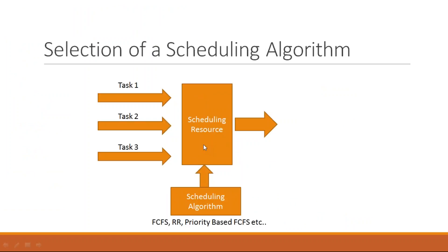The next tutorial I'd like to consider is selection of a scheduling algorithm. We are considering a scenario with three different tasks running on a single processing resource, and we want to understand which is the best scheduling algorithm that meets your performance requirements. I'm going to generate these different tasks using a combination of traffic generators, expression lists, and a few other blocks.